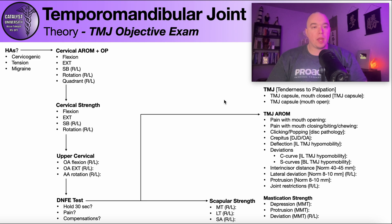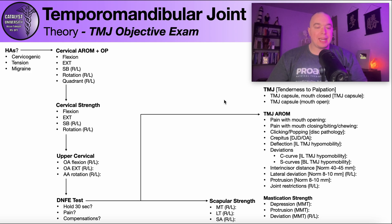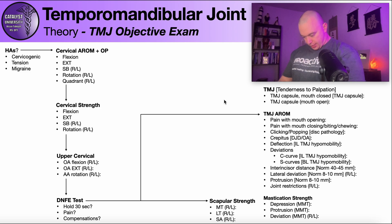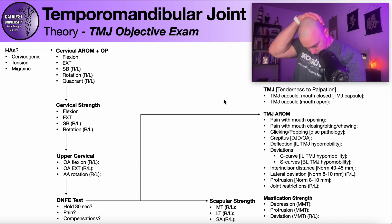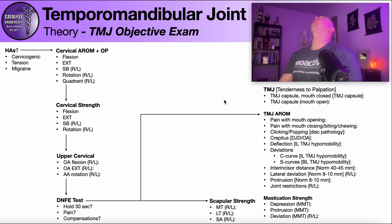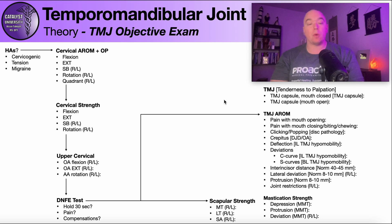The next part of the seated exam is cervical active range of motion with overpressure. If we are trying to rule out the cervical spine, we not only need to take them through these movements, but we need to apply overpressure. For example, with flexion, I say tilt your head forward as far as you can — does that cause any pain? No — but I haven't ruled out that motion. I need to add overpressure. Same thing with extension, side bending, rotation, and even quadrant — you do that with all of those motions.